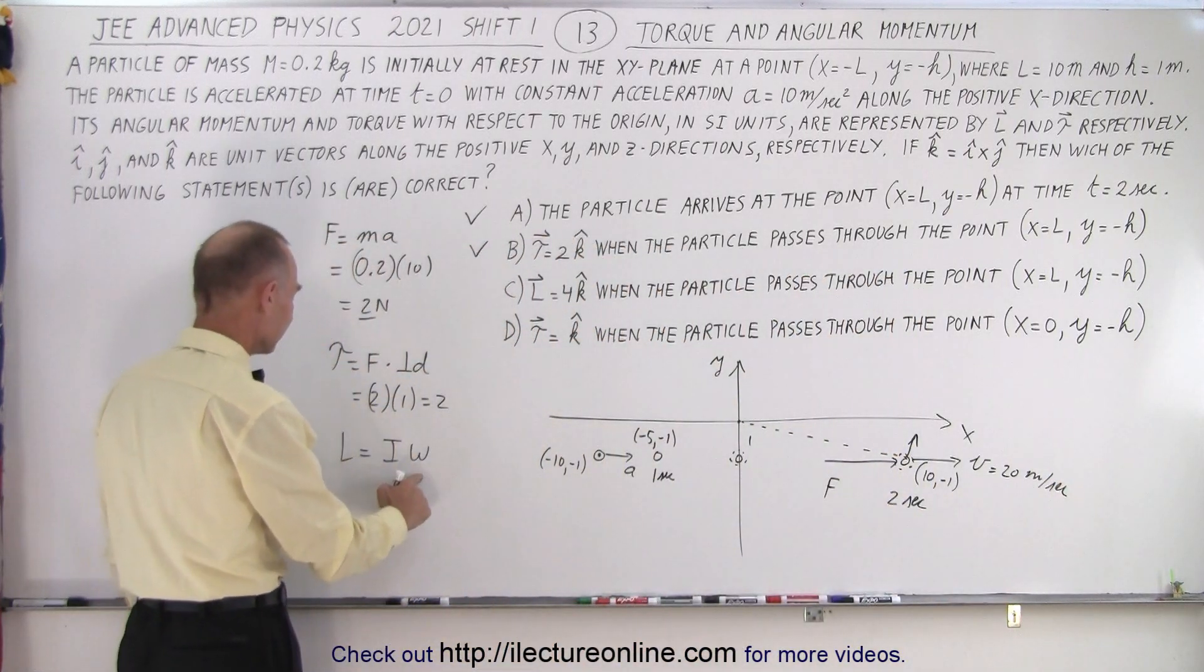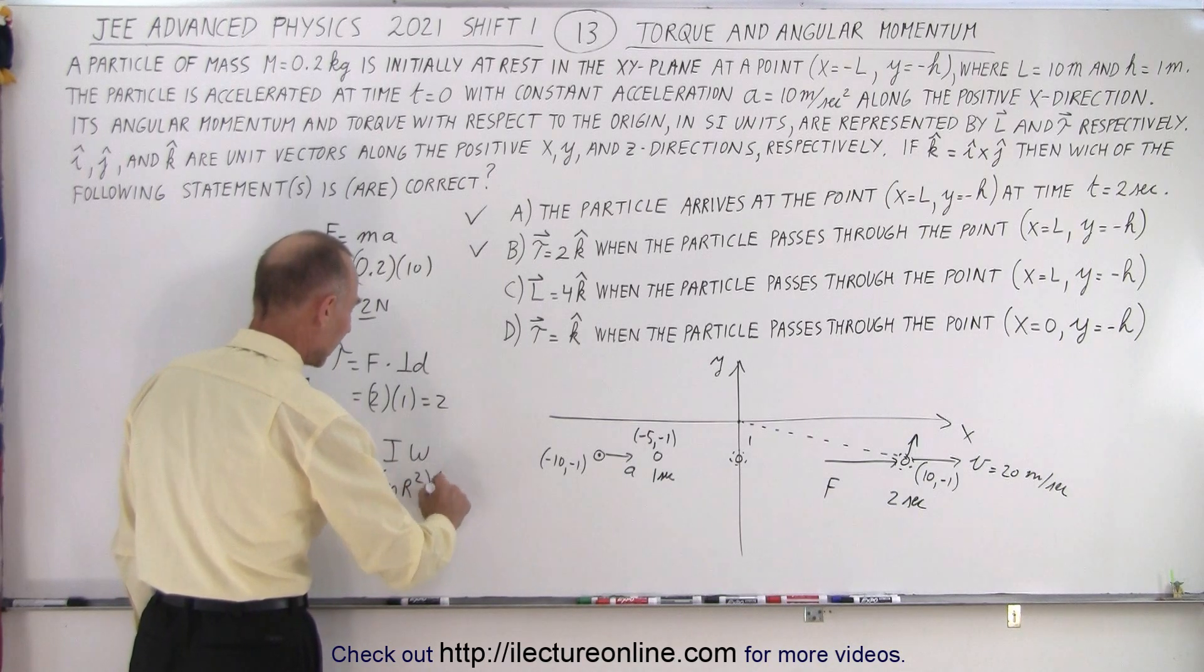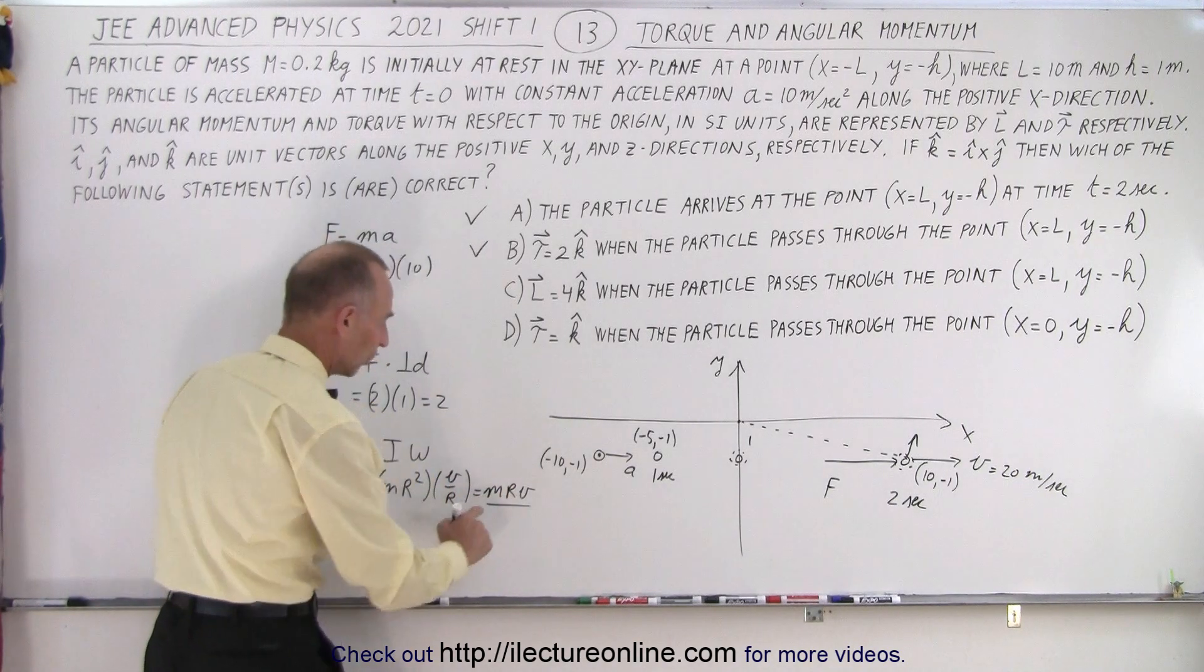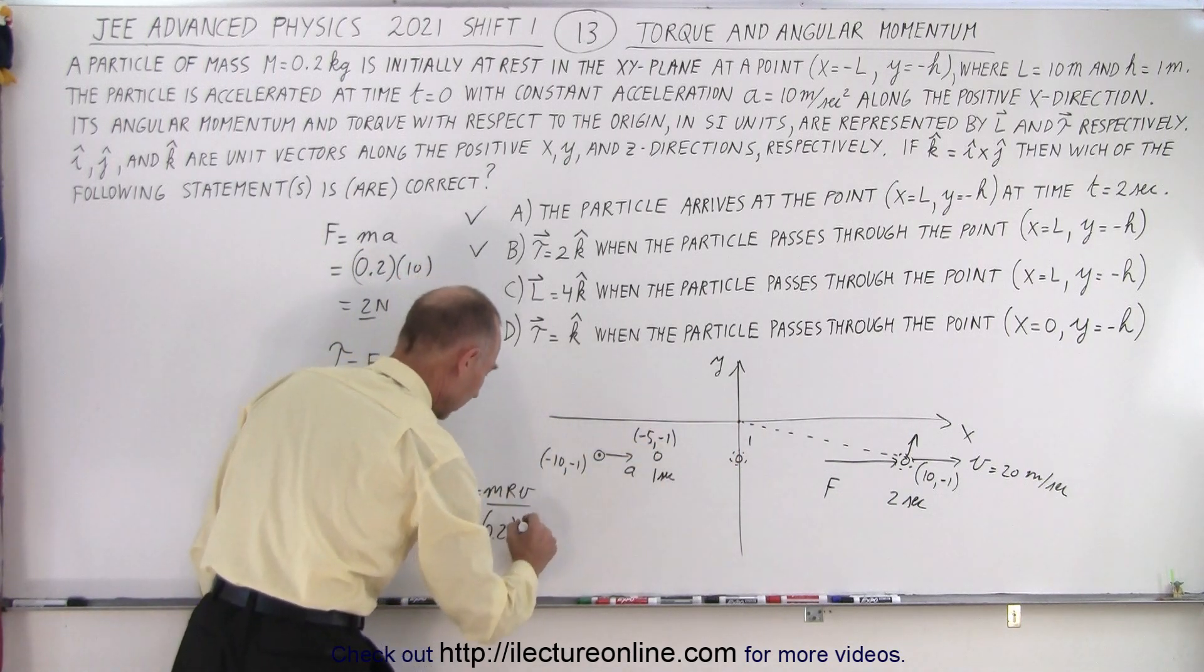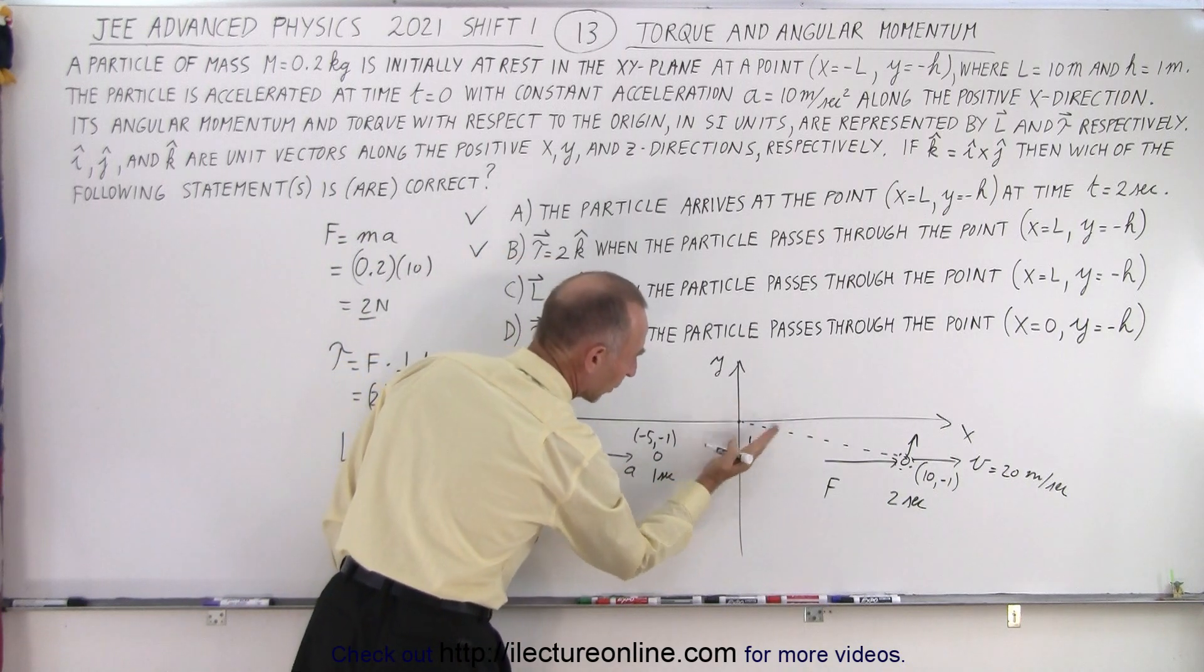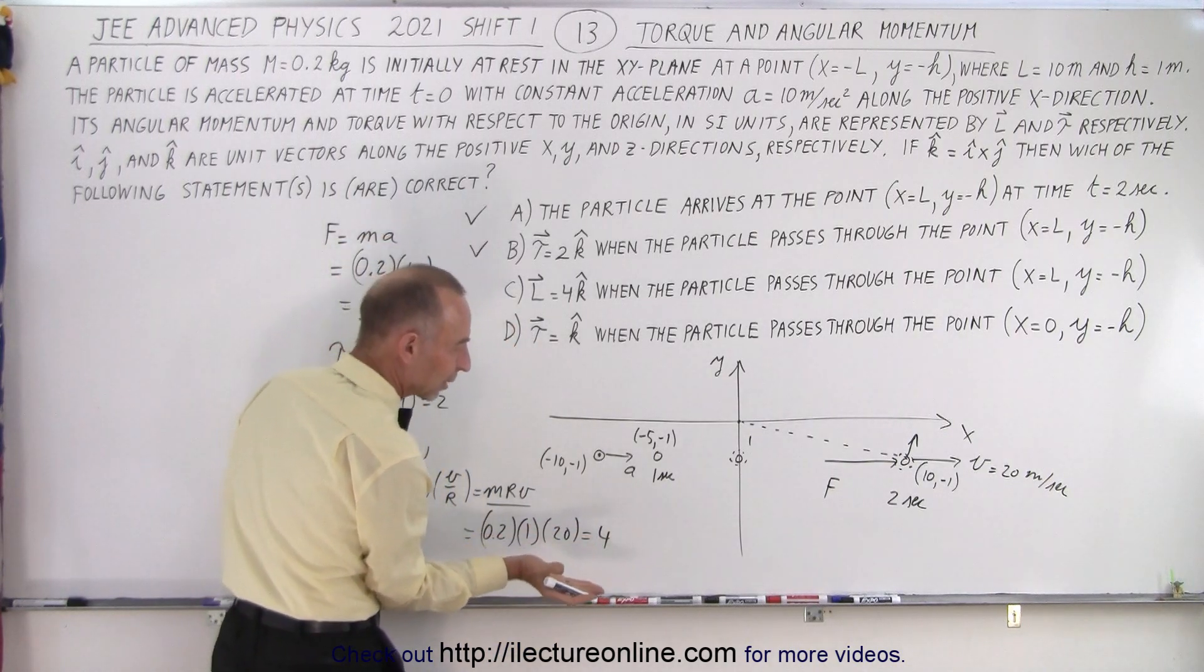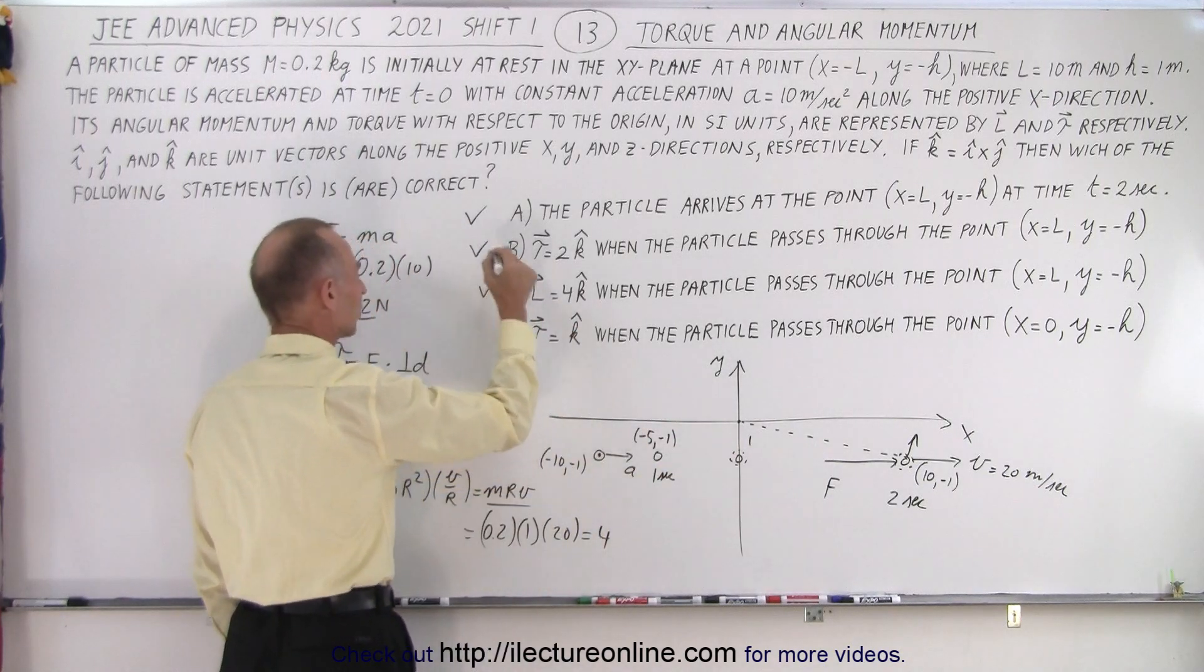So I omega, so I would be equal to mr squared, and omega would be equal to v over r. So that would be equal to mrv. So we know that the mass is 0.2, the radius if we take it here is one meter, and then we take the full velocity because then it would be perpendicular to the moment arm. So the full velocity would be 20, and so would be equal to 4. And again, if you take your fingers in the curl of the angular momentum, your thumb will point out this direction, so it'd be 4 in the k direction. So that's correct as well.